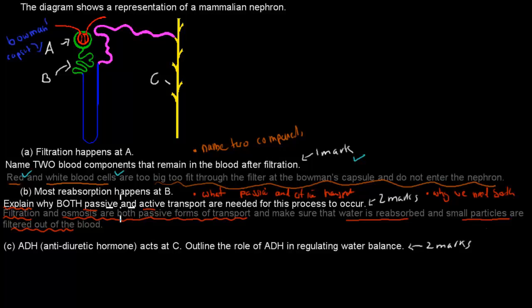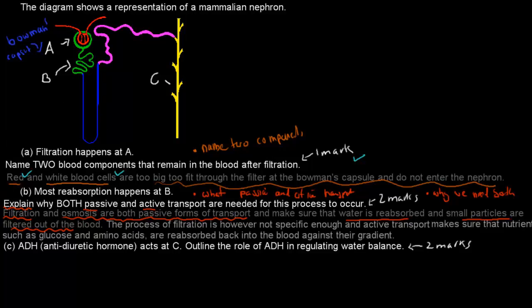So here we've gone through what passive transport does: helps us to put water back into our body, and also helps us to make sure that all the small things such as urea leave the actual blood and go into the nephron. But the problem was that the process of filtration is however not specific enough. Anything that's small enough will fit through, it's not specific enough.